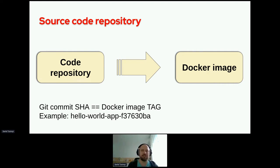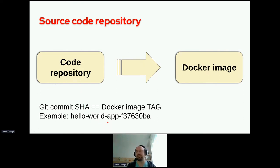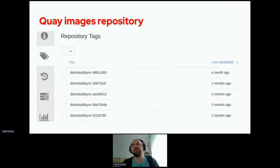Source code repository: the idea is to have a Docker image built after you create a merge request. Once a merge request is created, GitLab CI builds an image — we use Kanika for it — and sends this to the QA repository. A Docker image has a tag equal to the Git commit SHA. So for example, for a Hello World application, we would have a tag like this. You create a merge request and you get an image with a specific tag.